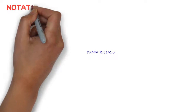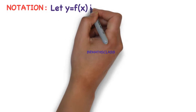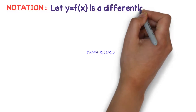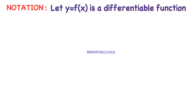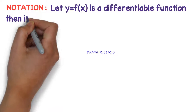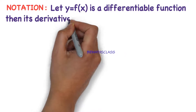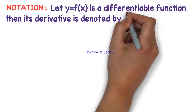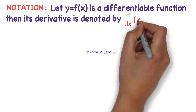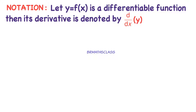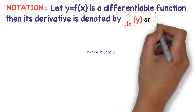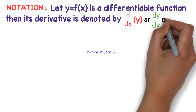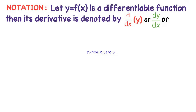In this class, we learn how we denote the derivative. Consider a function y is equal to f of x. How we represent derivative of y — how it is denoted — we will learn in this class. d by dx of y means derivative of y with respect to x, which is also written as dy by dx. dy by dx means derivative of y with respect to x.